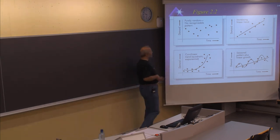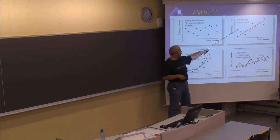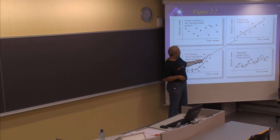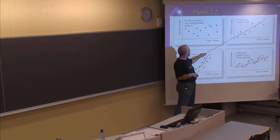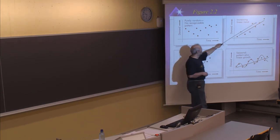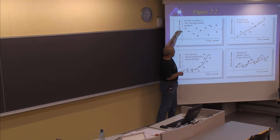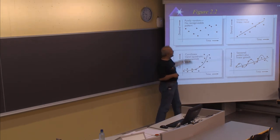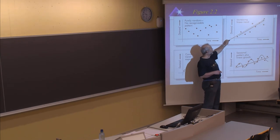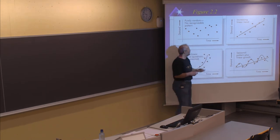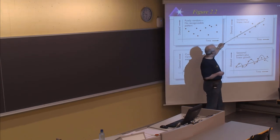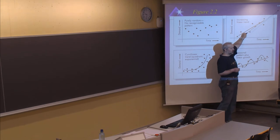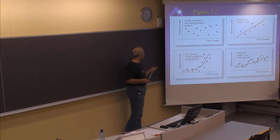The next example, which we also started looking at with regression analysis, is when you have a linear trend. It's not a perfectly straight line — there is still some variation — but the variation goes around a trend line. By different techniques we can find the formula for the line that best fits the historical data. To make a forecast, we just prolong the line into future time periods.